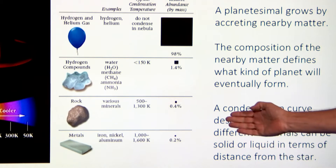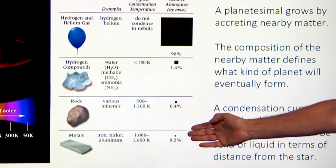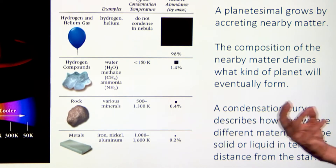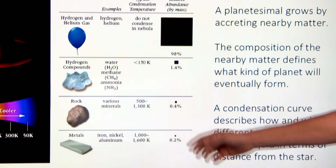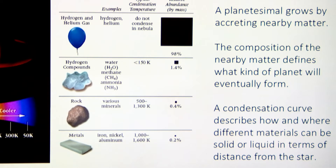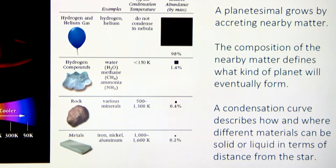The stuff of planets is a tiny fraction of the mass of a forming solar system, and these materials have to persist at certain temperatures. At any temperature below about a thousand to fifteen hundred Kelvin, metals can persist in the liquid or solid state. At a temperature below about a thousand Kelvin, rocks are not vaporized or liquefied and so can exist in solid form. At a temperature of about a hundred and fifty Kelvin, hydrogen compounds — including not just water but methane and ammonia — can exist either in solid or liquid form, but above that temperature they will be vaporized and probably driven away.